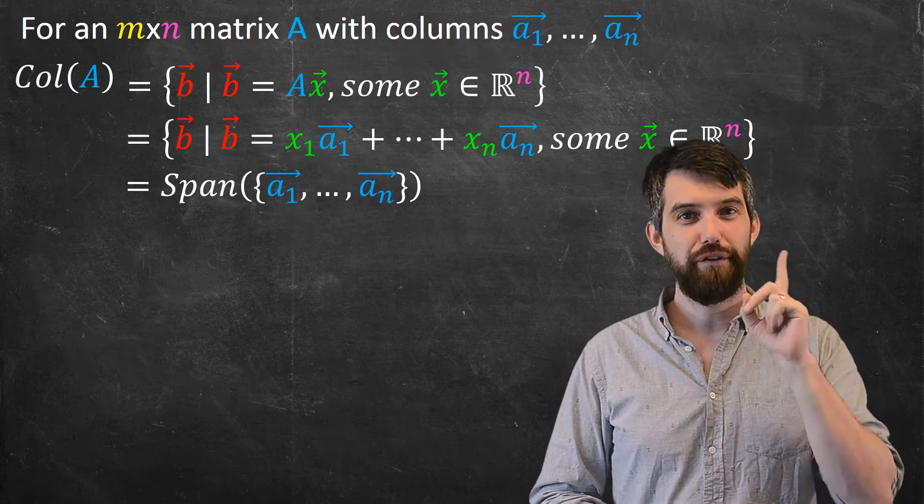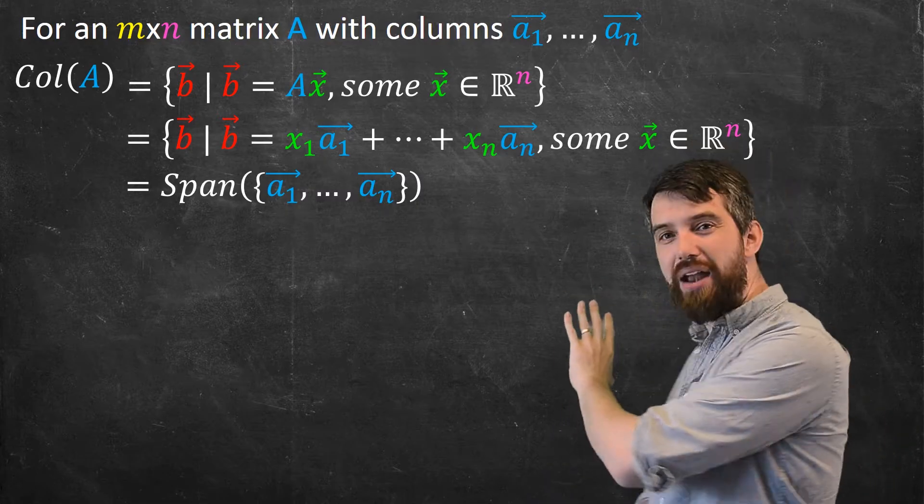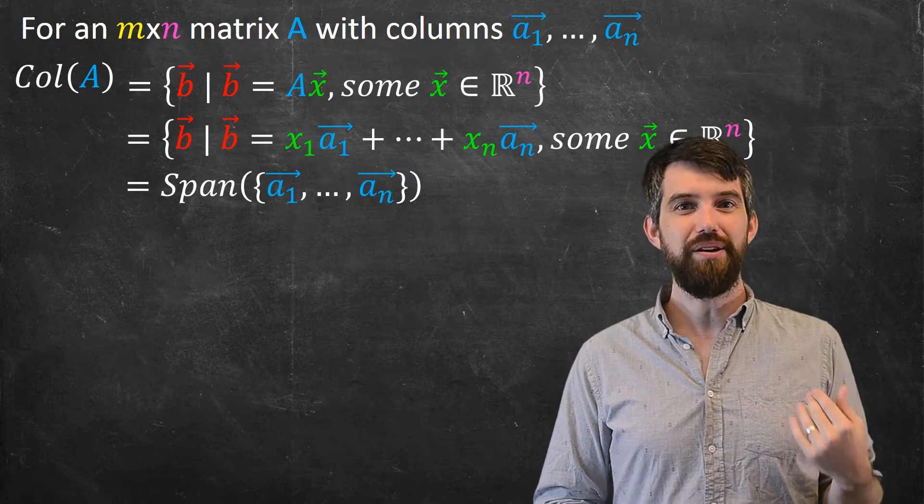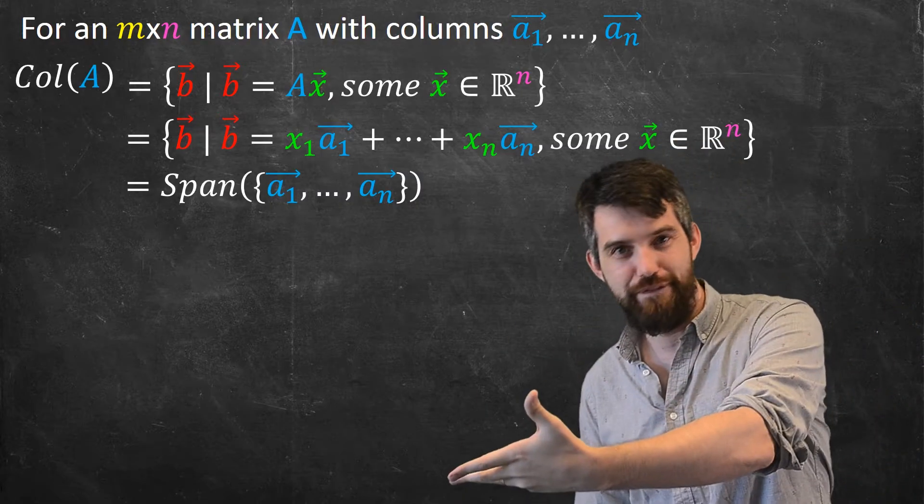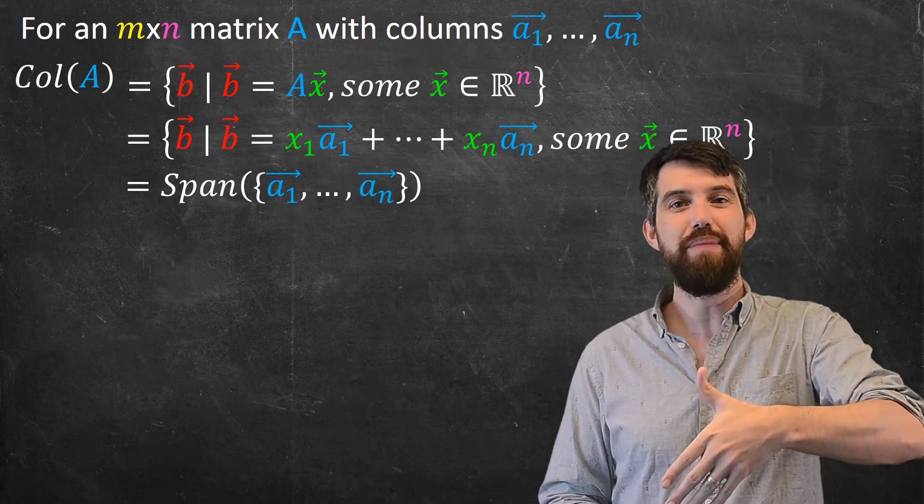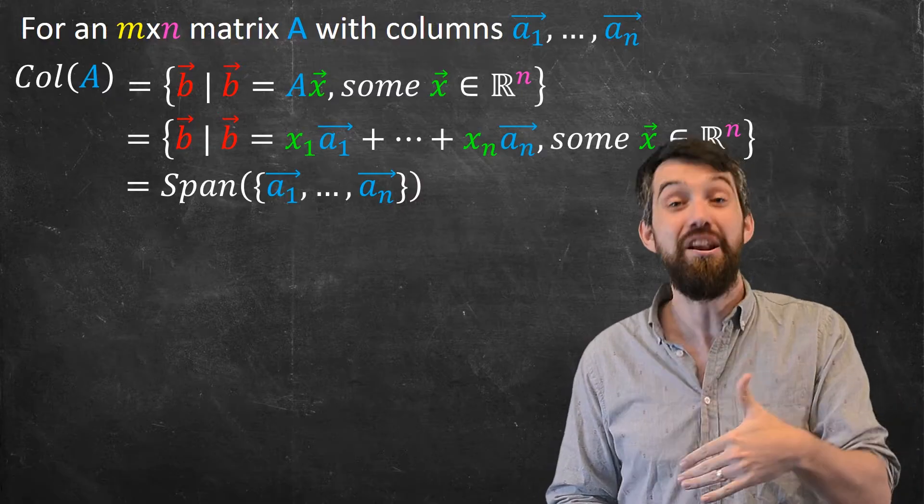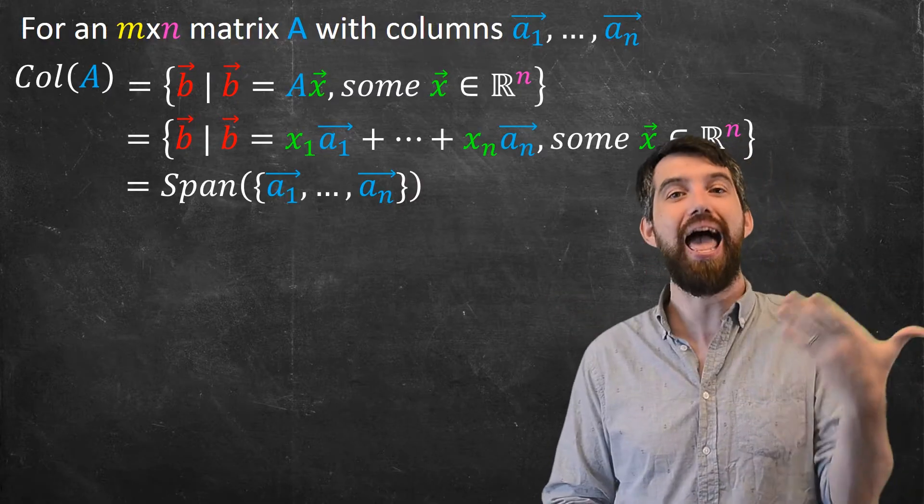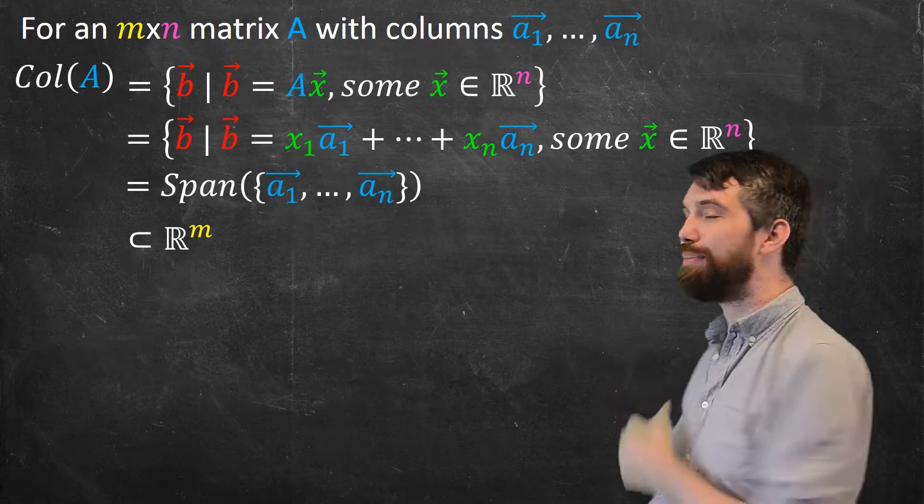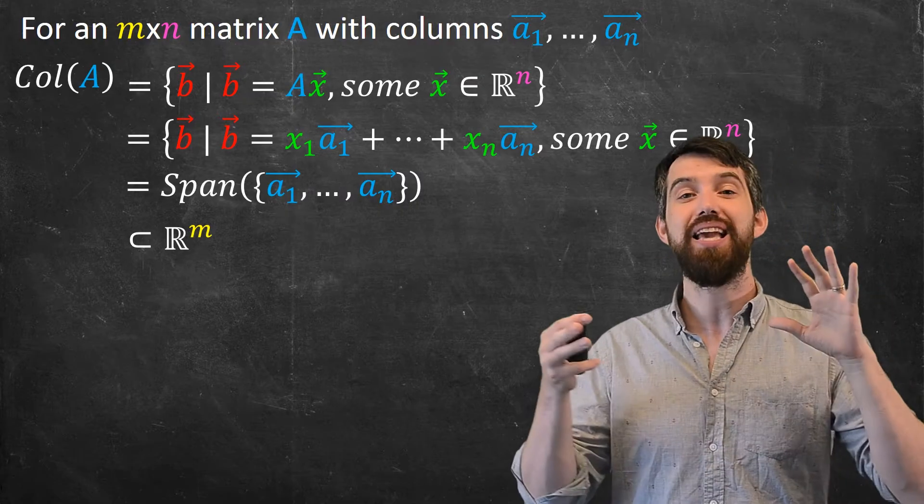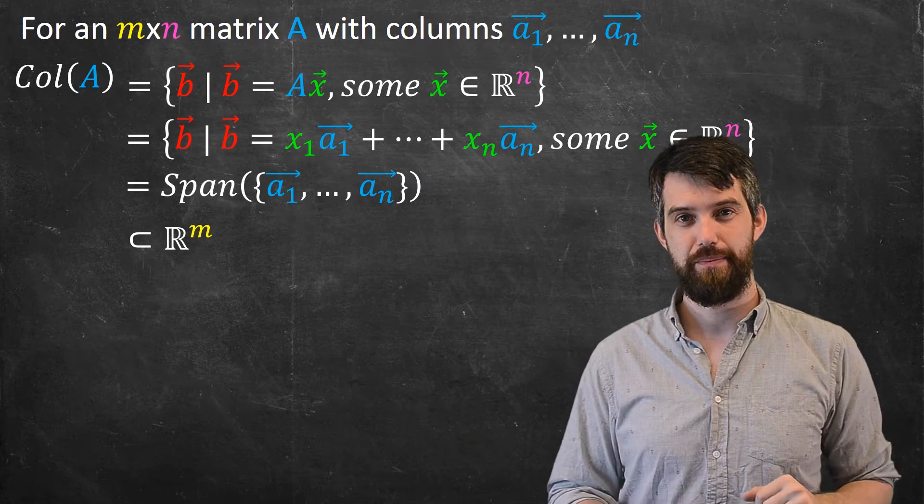Now, two different points. First of all, this span, where does it live? The b is the output vectors. So if it's an m by n matrix, it inputs n vectors like x and outputs m vectors. So this is the subset of ℝᵐ. It's in the output. It's in the codomain.